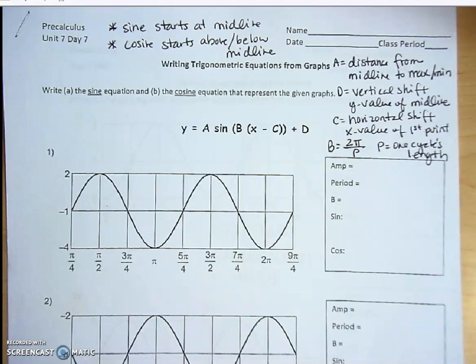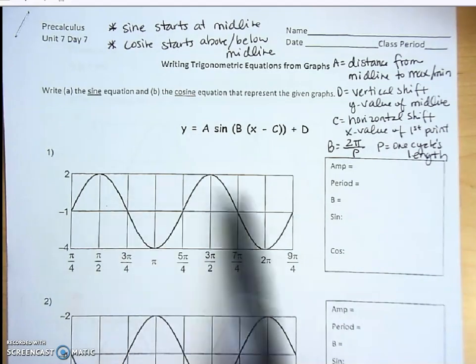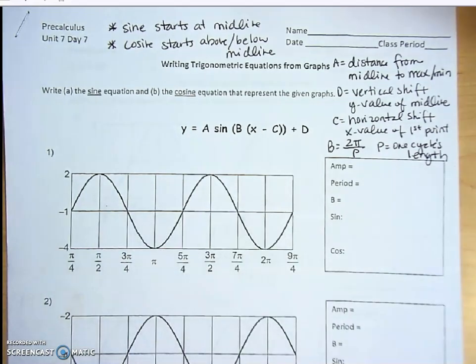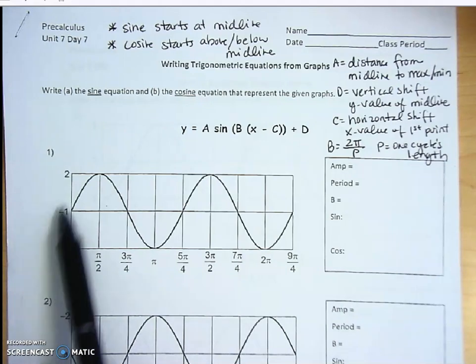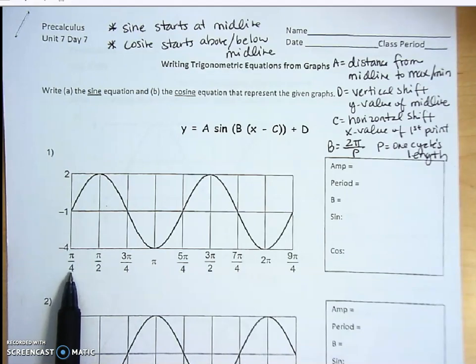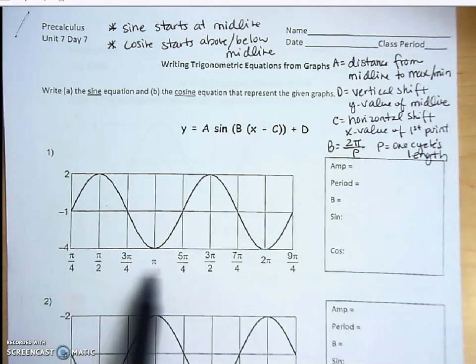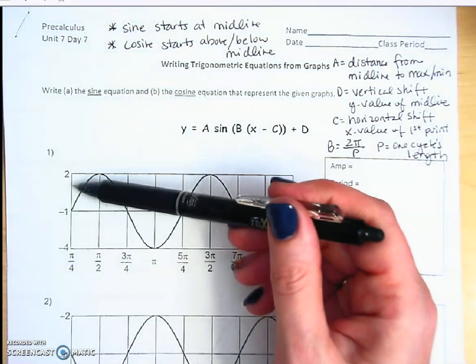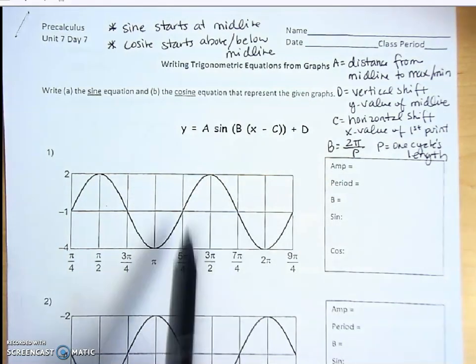Here's our video for writing trig equations from graphs. A few things to note at the outset: the coordinate planes are arranged differently than our previous lessons. The graph is already shifted, and the origin is not starting at zero-zero — it's starting at its shifted location, so you'll see it starting at pi over 4 on the x-axis and negative 4 on the y-axis.